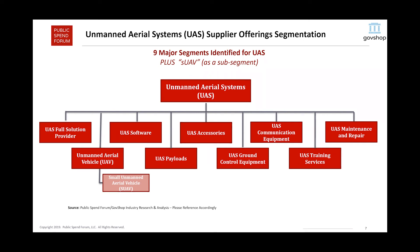The full solution providers cover the entire spectrum of needs a buyer would have in buying, deploying, and utilizing unmanned aerial systems. Then we have the individual segments to the right, such as UAS software, UAS payloads, UAS accessories, UAV (the vehicle — that's the drone part), and all the way to the far right, training services and maintenance and repair. This is how the market is organized and how we understand buyers approach the market — it varies depending upon your stage and journey in deploying unmanned aerial systems.